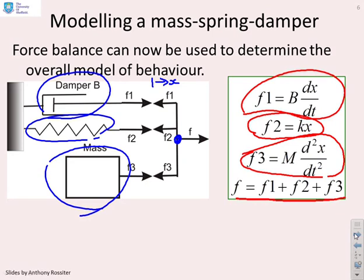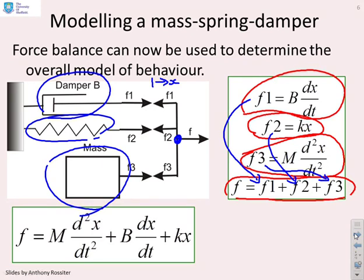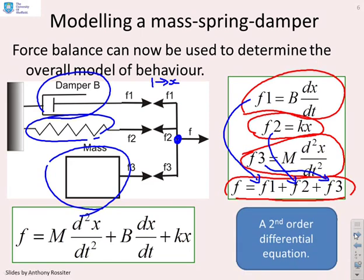The force balance is F equals F1 plus F2 plus F3. Substituting each term in, we get: F equals m d²x/dt² plus B dx/dt plus kx. In other words, a second-order differential equation. And that's all there is to modelling a normal mass spring damper system.